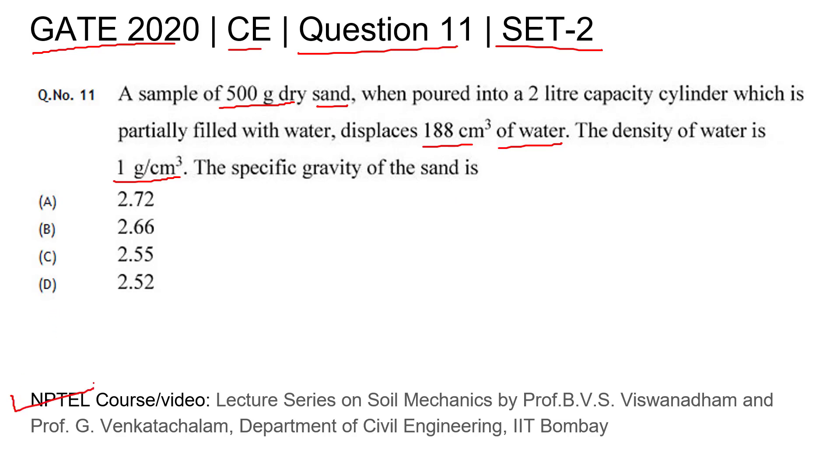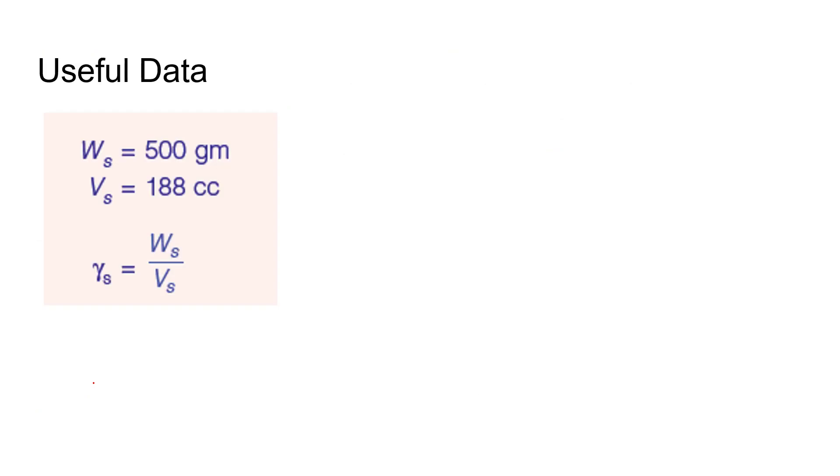You can refer to this video lecture. Let us write down what is the given data. They have given a sand sample, that is a weight of 500 gram sample, dry sand. After that they have mentioned this sand is poured into a 2 liter capacity cylinder which is partially filled with water and displaces this much of volume, the volume displaced.